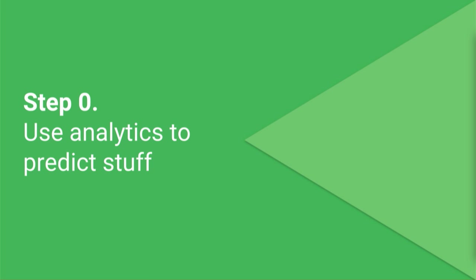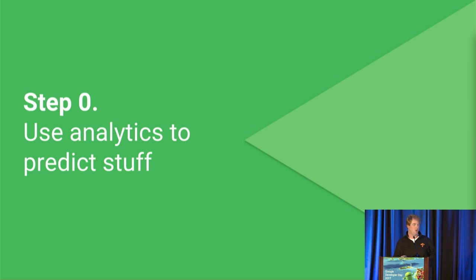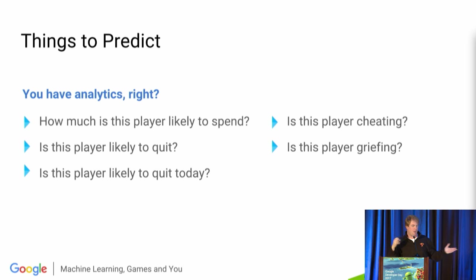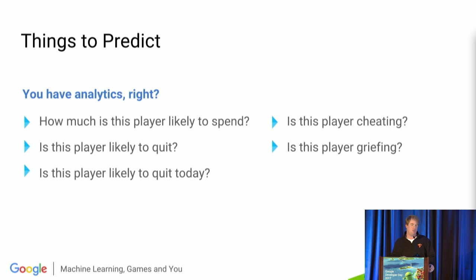Step 0 — we're all engineers, so we're going to start with 0. Use analytics to predict stuff. Modern games can produce all kinds of interesting data, and if you're smart, you're probably collecting some. Things like: how much is this player likely to spend? Is this player likely to quit? Is this player cheating? Is this player being toxic? A simple linear regression or linear classifier can help you get a boost and understand your audience better.